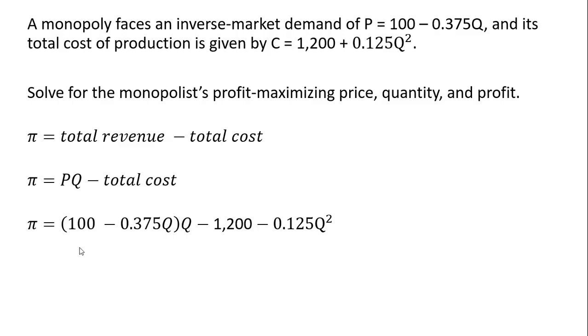All right, simplifying. I'm just going to take this Q and multiply through by what's in parentheses. And then the next thing I'm going to do, I'm going to add these Q squared terms. So I'm going to add these two terms over here. And we have profit equals 100Q minus 0.5Q squared minus 1,200.